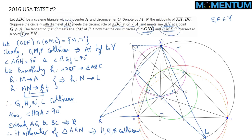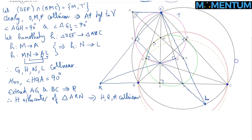Focusing on the circumcircle of G, N, Q: since angle RGN = 90 degrees and angle RQN = 90 degrees, it tells us that RGQN is cyclic — this is the circle with diameter RN. So the circle of interest passes through R, G, Q, and N.